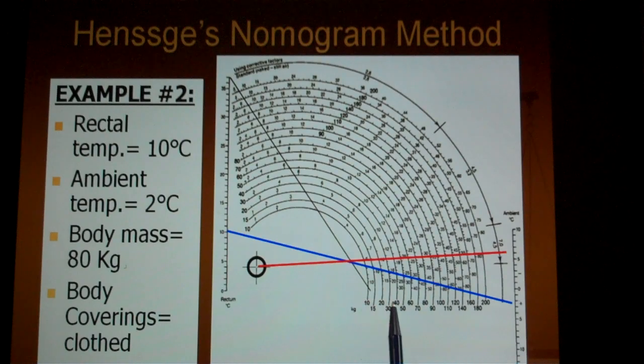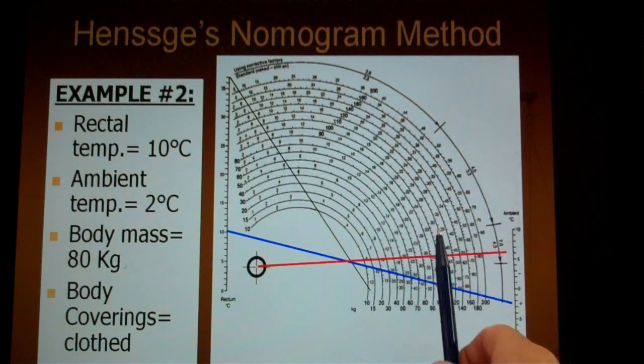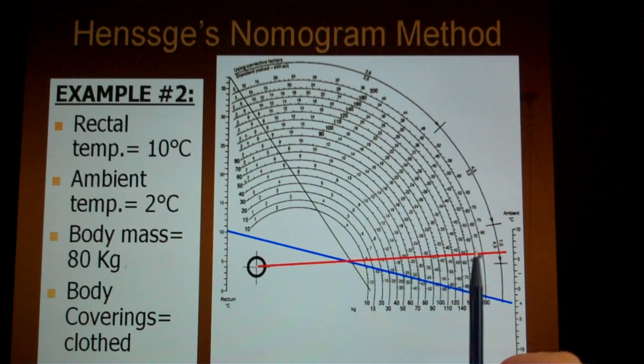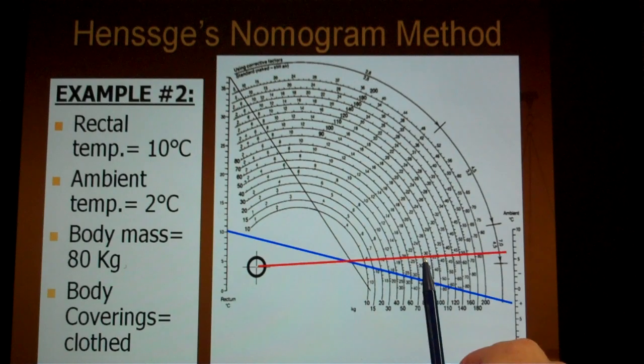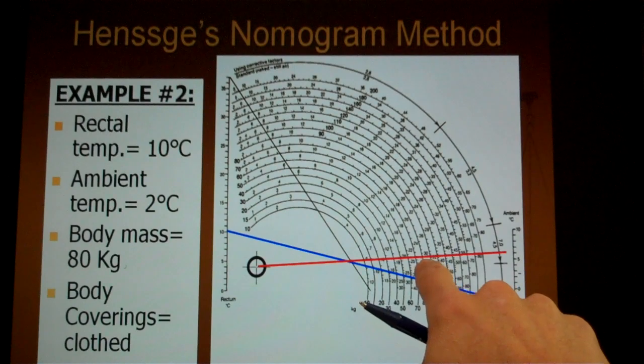So I can either go along this bottom line, 10, 15, 20, 30, 40, all the way up to 200 kilograms, or I can come over here and go up. In this case, 80 and where my line is, I'm going to want to use the scale down here. So here is 80. I'm going to go up along the line for 80 until I intersect or cross where my red line now has touched that particular curving line. So again, 80 kilograms, I go up to the red line and I stop there.